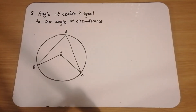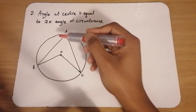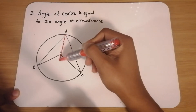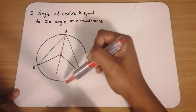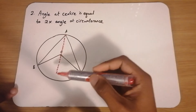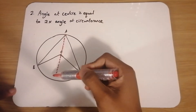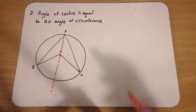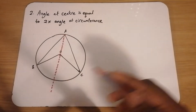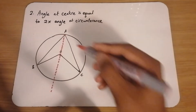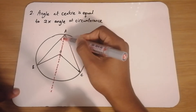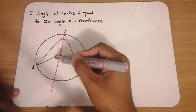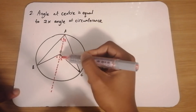To do this we have to start with a construction. We're going to construct a line that passes through A and O. This line doesn't have to go all the way to the circumference, but you can if you want to. Now we're going to be working in two triangles, so to make it easier to reference the angles, I'm going to label them angle A1, A2, angle O1, and angle O2.